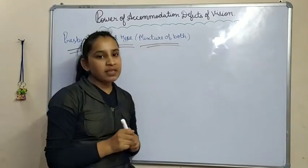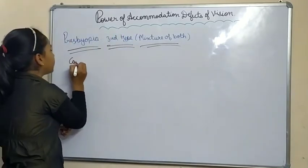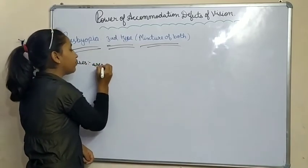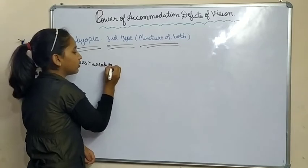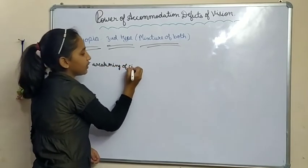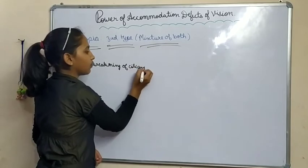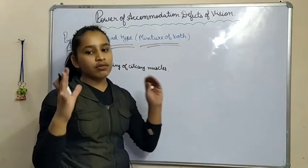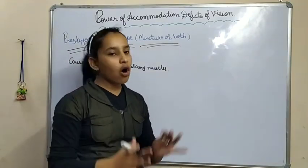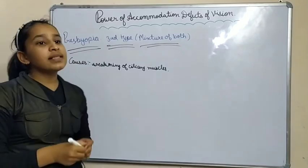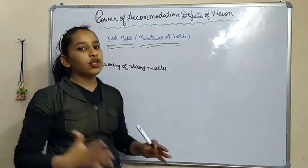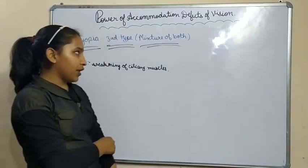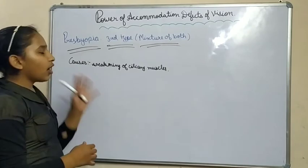The causes of presbyopia are the weakening and aging of the ciliary muscles. When the ciliary muscles get weak and old, they lose the ability to contract and relax properly. This weakening of the ciliary muscles causes presbyopia.